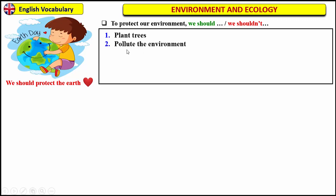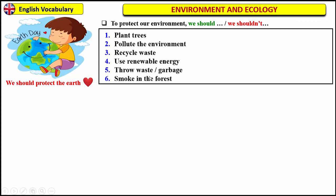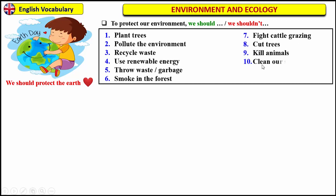Here is a list of things that we should do and we should not do to protect our environment and to save our planet: plant trees, pollute the environment, recycle waste, use renewable energy, throw waste or garbage, smoke in the forest, fight cattle grazing, cut trees, kill animals, clean our streets, destroy our planet, preserve the wildlife.